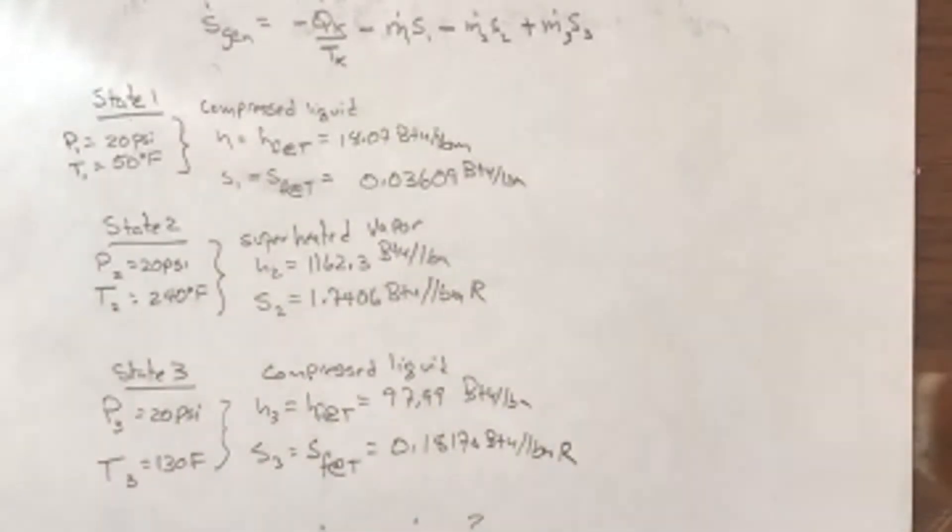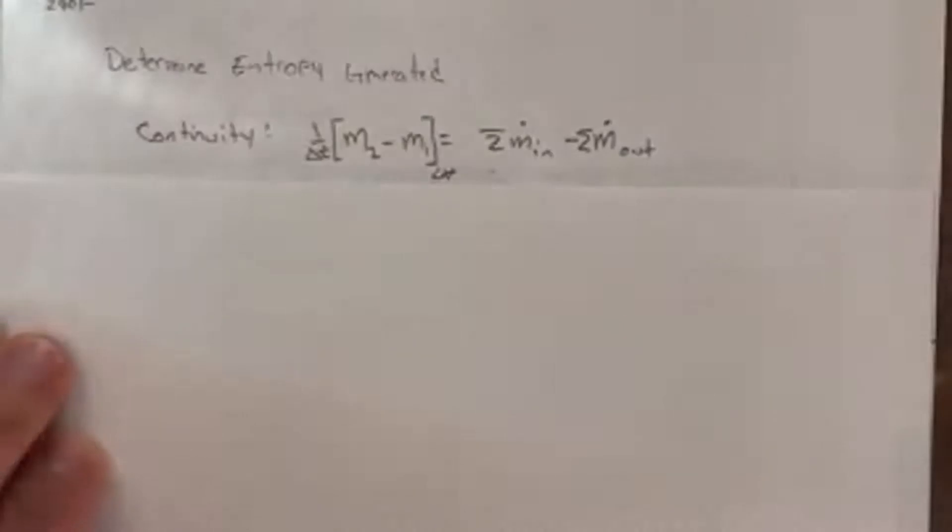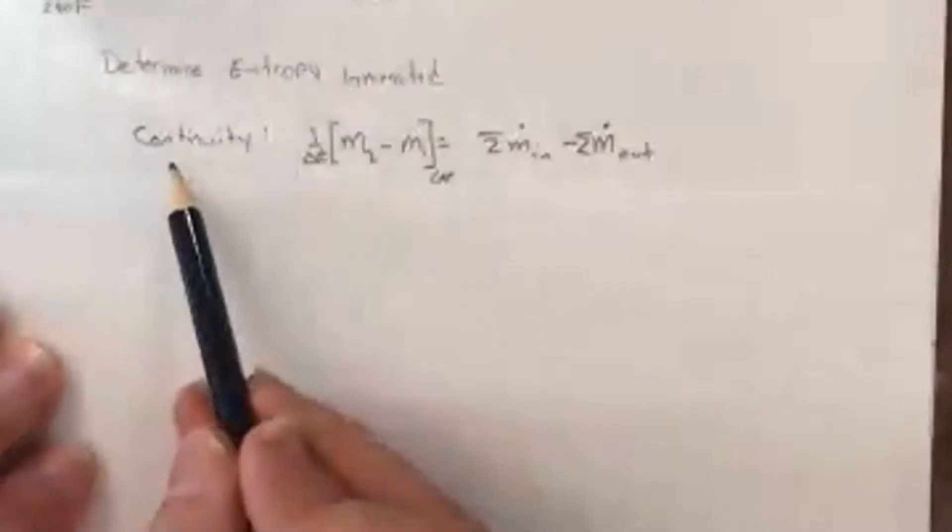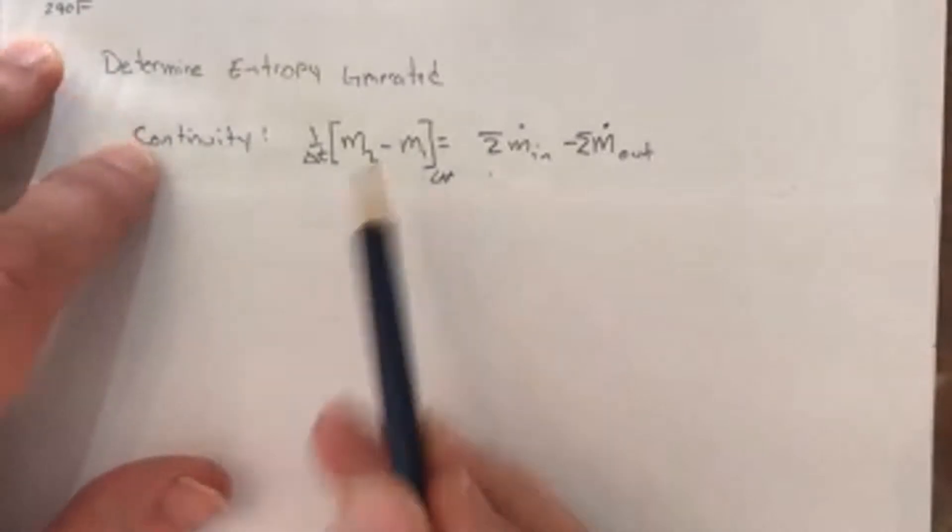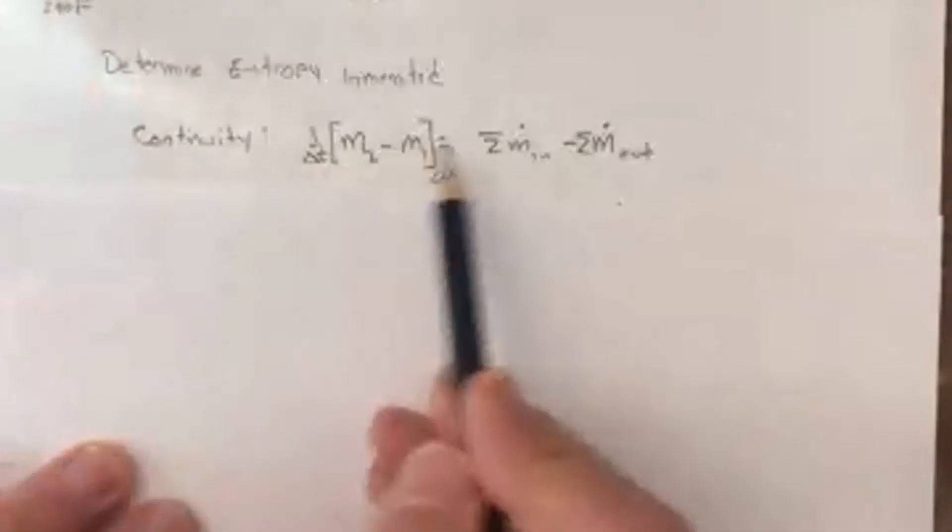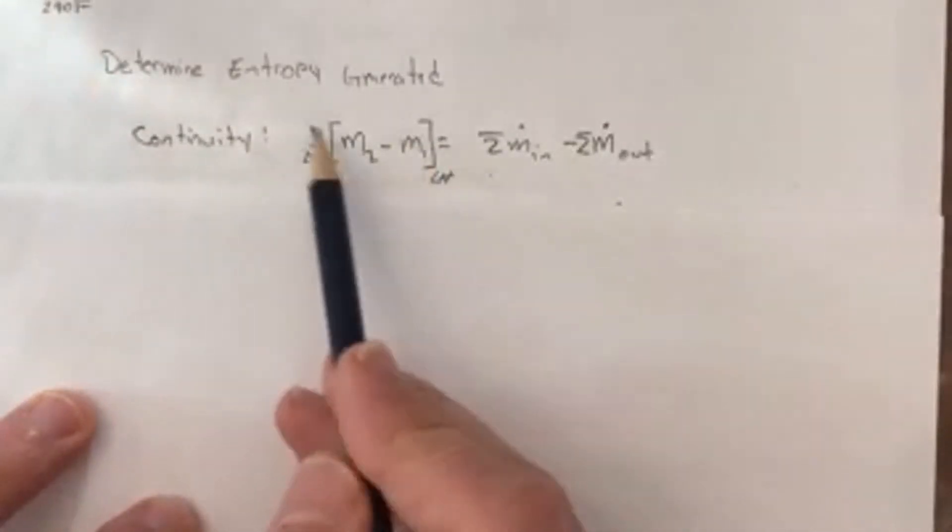So the answer is just to write more equations, right? More unknowns means more equations. So I could come back and write the continuity equation for this problem.